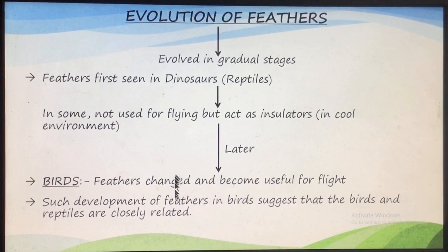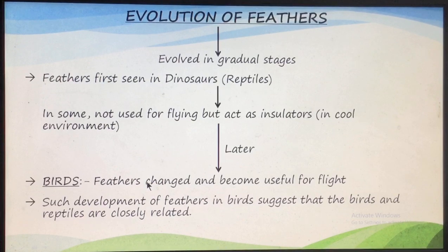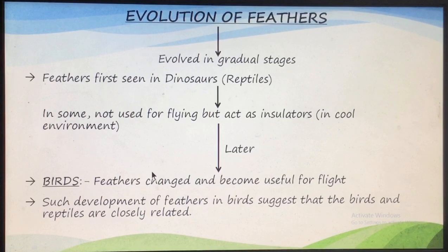We can say that the development of feathers in birds suggests that birds must have evolved from reptiles, or that reptiles and birds are closely related. There is a change which is useful for one organism for one property, and for other organisms it has different functions — in dinosaurs the feathers acted as an insulator, but in birds they changed into wings and were used for flying.